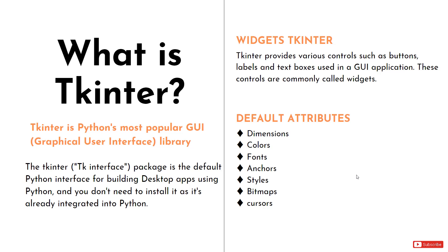So what are widgets? Widgets are the things that we need to build a GUI. In order to build a GUI we need an interface — that's a widget. We need a button — that's a widget. We need a text box — that's a widget. So the things that we need to build an interface are called widgets. The widgets we get from Tkinter include buttons, labels, text boxes, and many more cool GUI widgets.